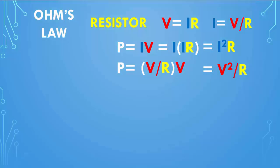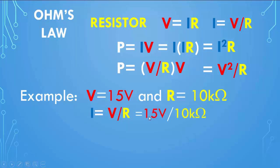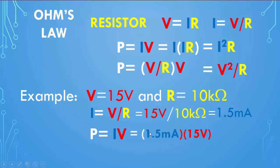Let's go through an example where V is 15 volts and R is 10 kilo-ohms. We know that I equals V divided by R, so we can solve for I: 15 volts divided by 10 kilo-ohms gives us 1.5 milliamps. Now the power, given that we have voltage and current, is P = IV. So I is 1.5 milliamps and V is 15 volts, giving us a final result of 22.5 milliwatts.